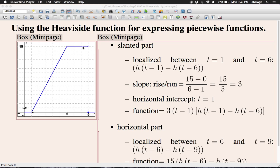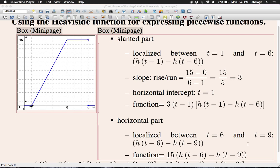The next part is the horizontal part. It goes between 6 and 9. It's localized between 6 and 9, so we use h(t-6) - h(t-9). The function is a horizontal function with value 15, a constant function. So the function is 15 times [h(t-6) - h(t-9)].